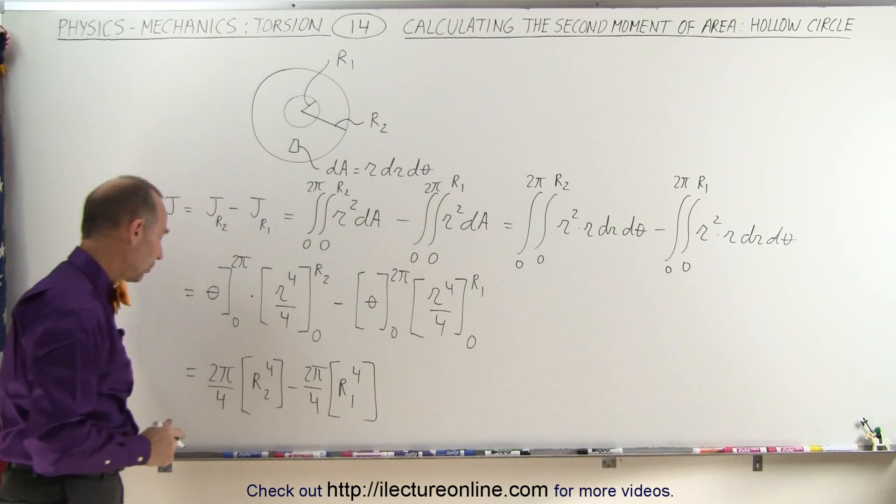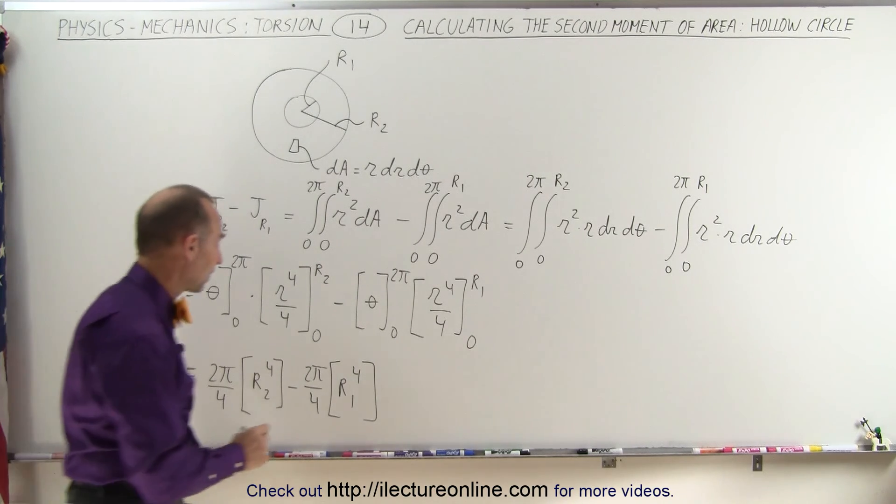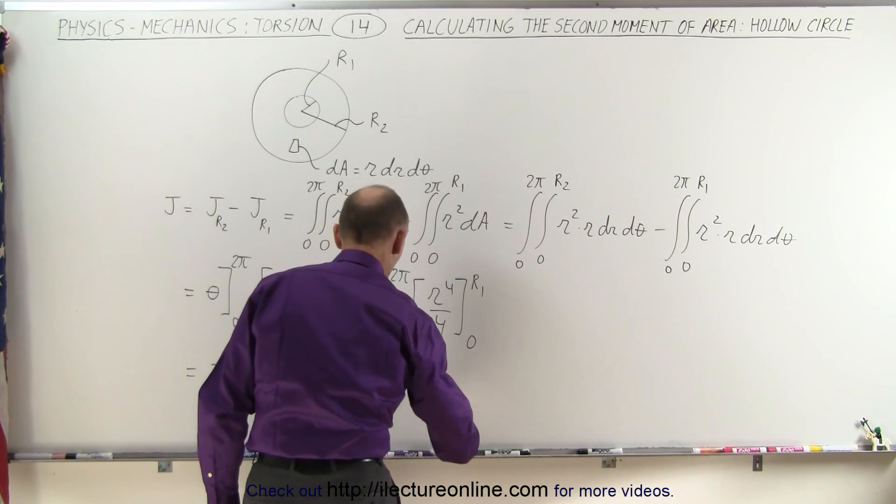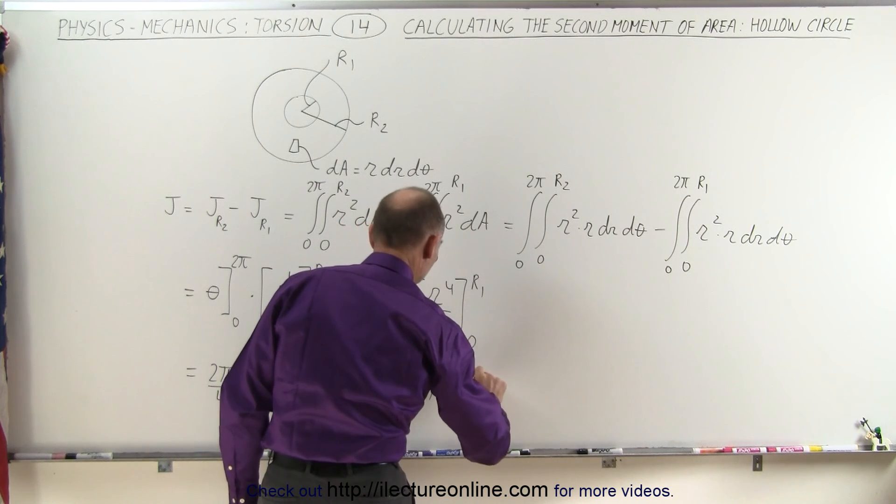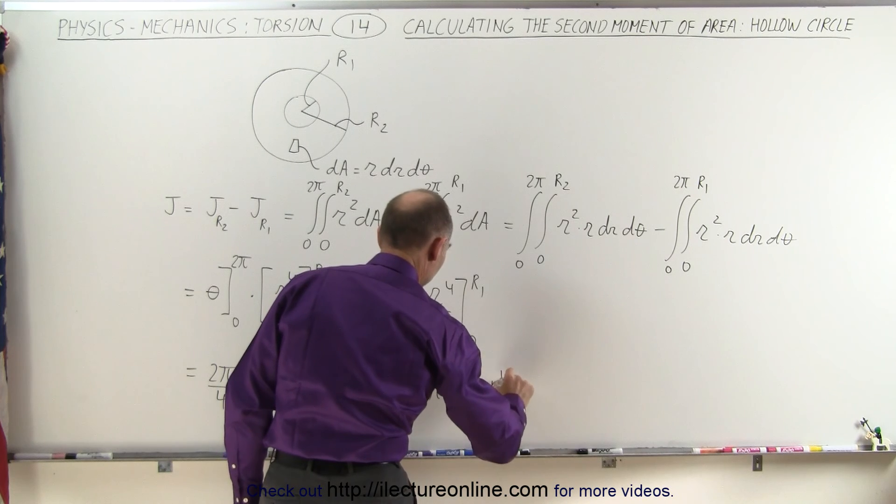And of course, at that point, you realize that you can factor out a 1 half pi, and so this becomes equal to 1 half times pi times the quantity R sub 2 to the fourth minus R sub 1 to the fourth,